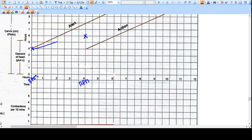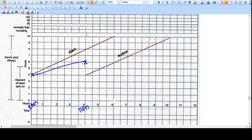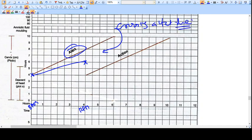So the graph becomes like this. As you can see here, the graph is on the right side of the alert line. That means it is crossing the alert line.